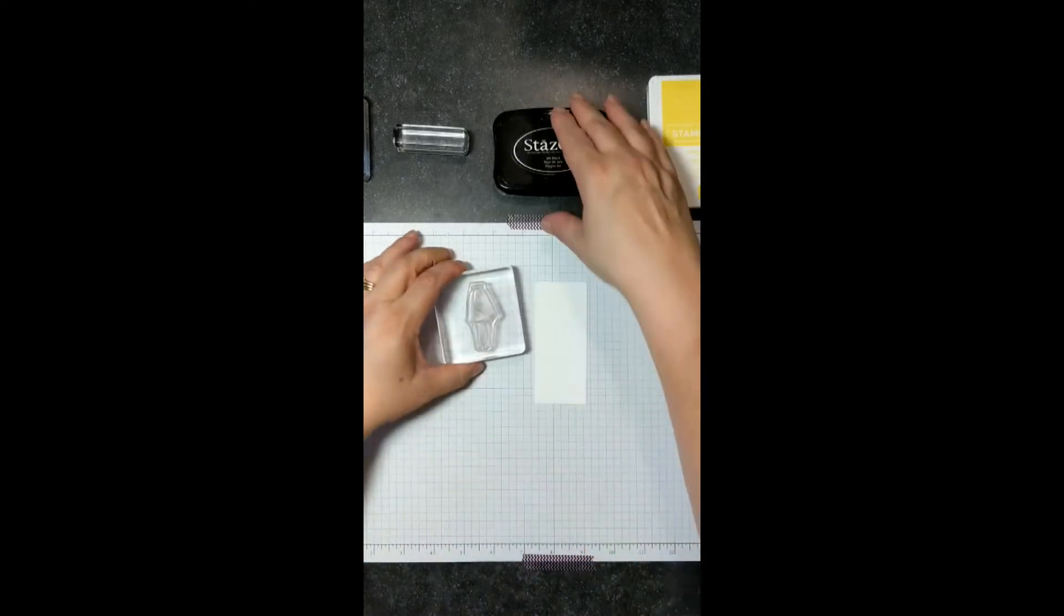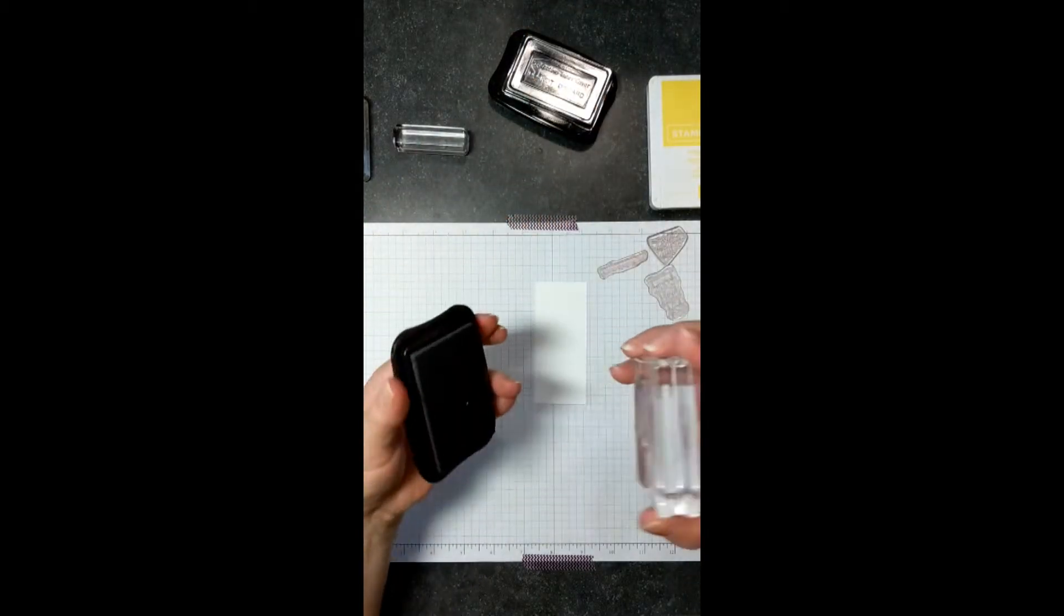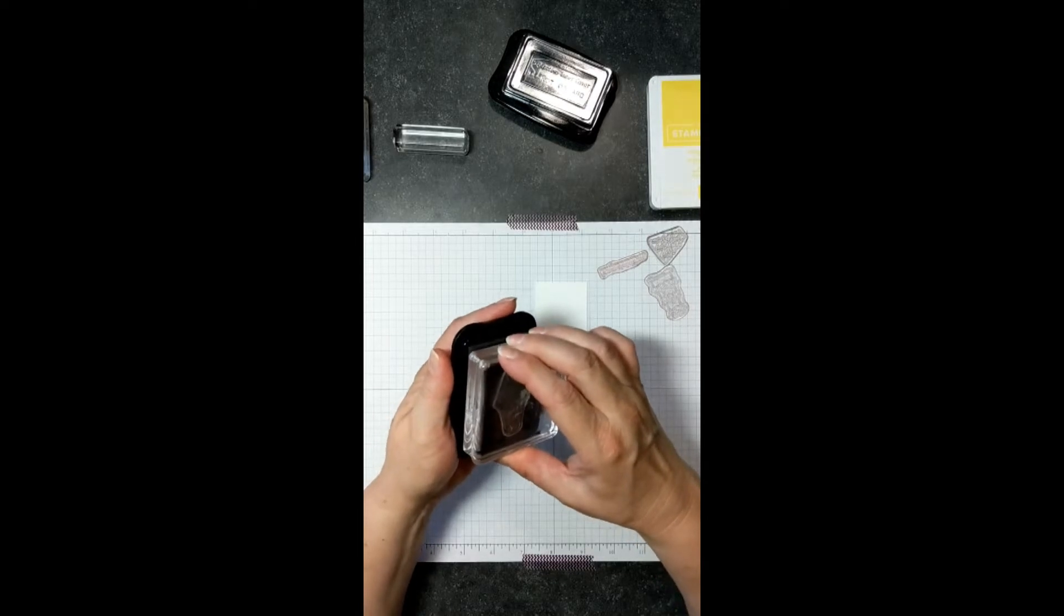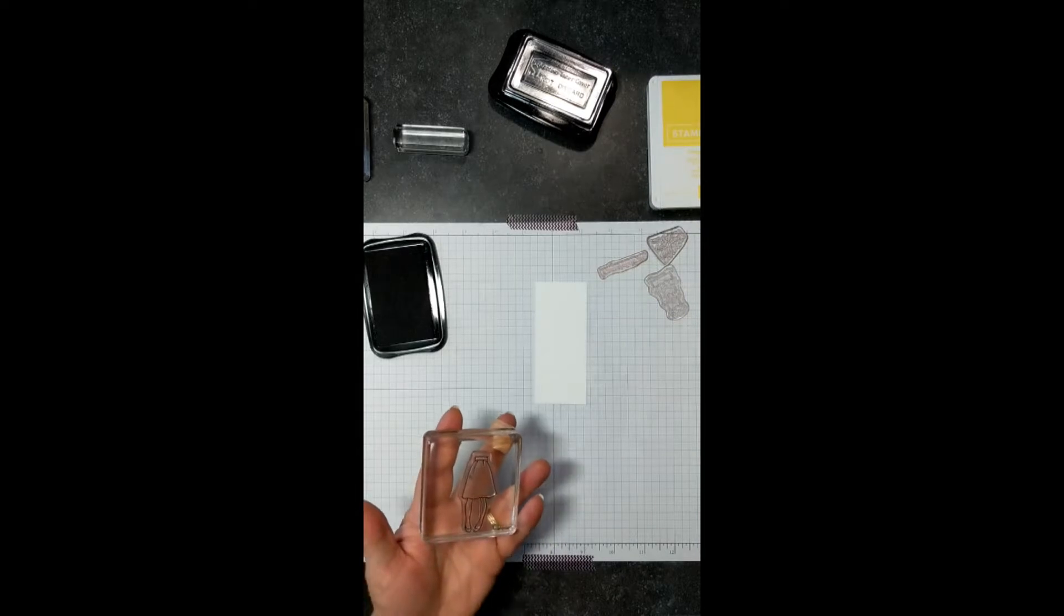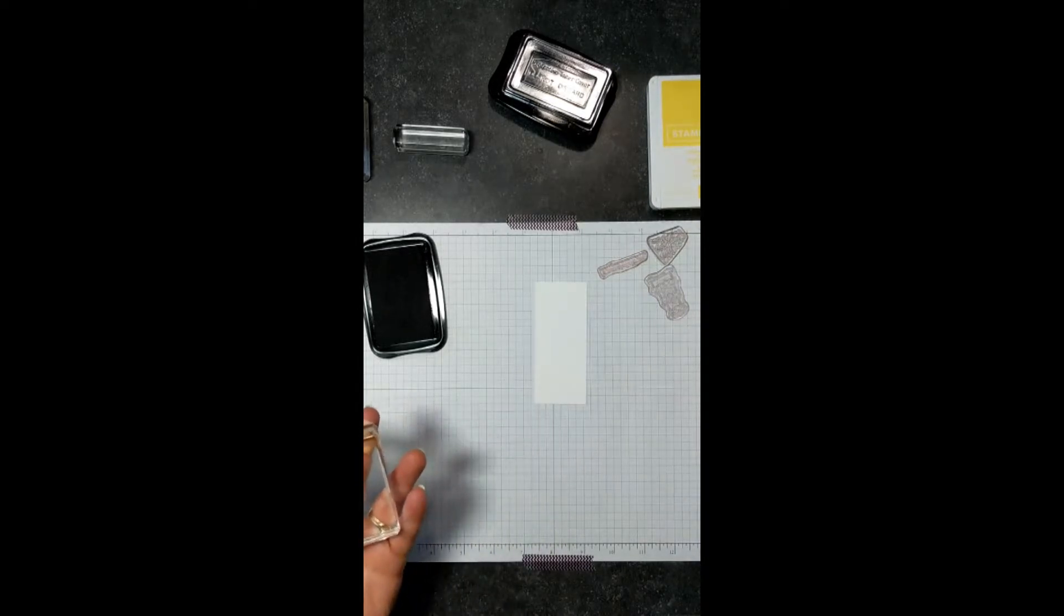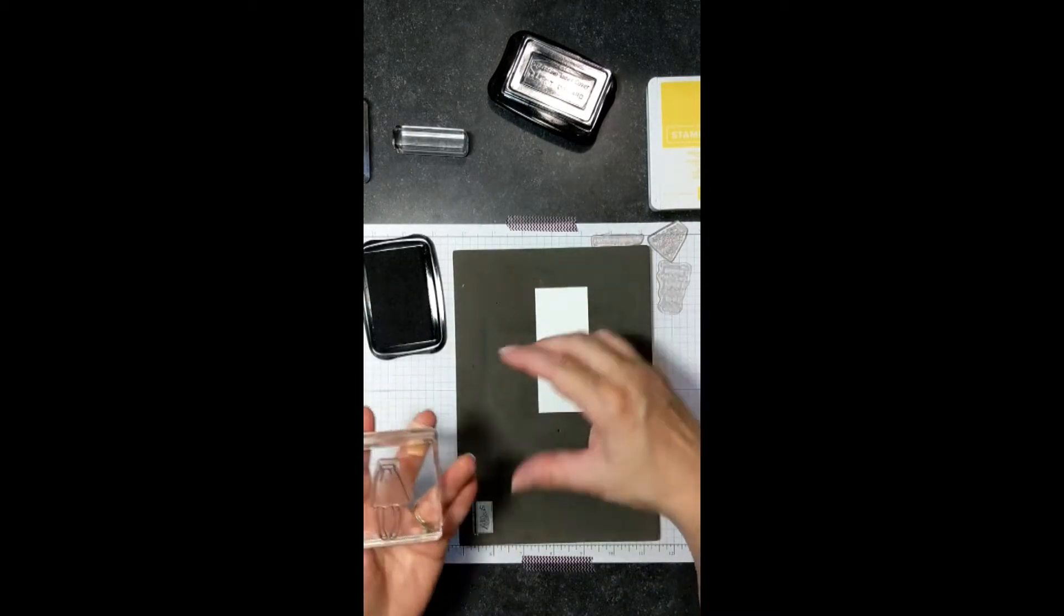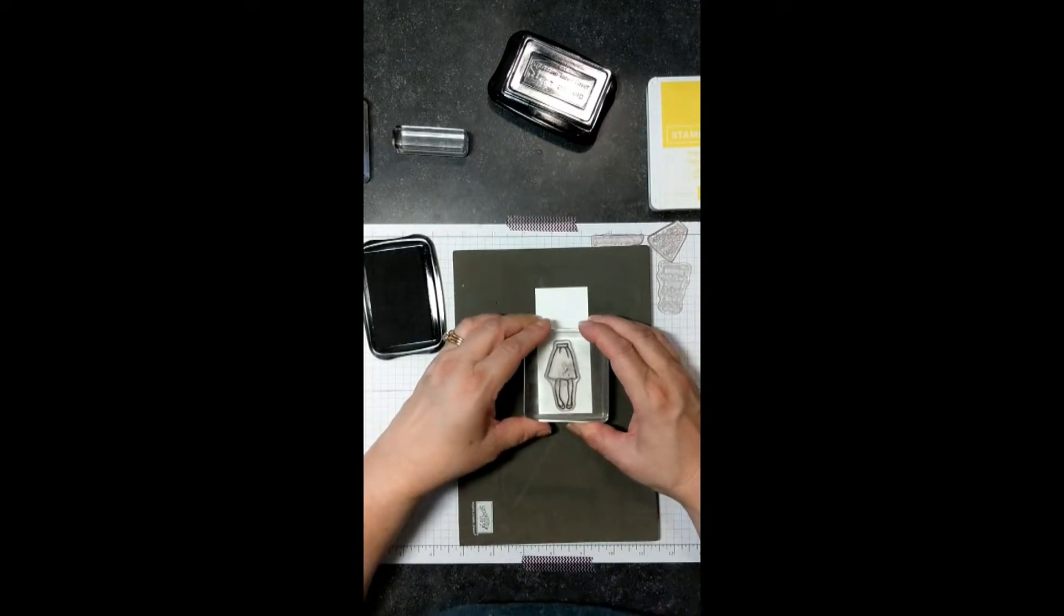I'm going to mount this on my clear block, and I've got my Stazon out. The reason I use Stazon is because it is a water-resistant type of ink, and so when we do our blending with our pens, we're not going to have the problems of it bleeding. So I'm going to get my handy-dandy pad here so that we don't have a problem with getting a good image. I'm going to just push this down, give it a press for a minute, let the paper pull the ink off the page.